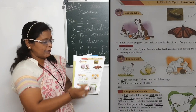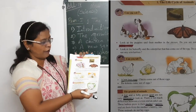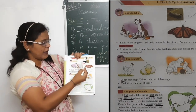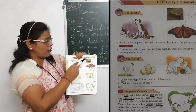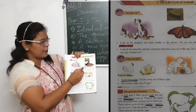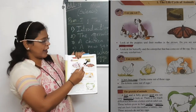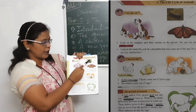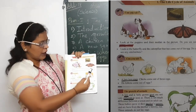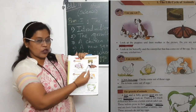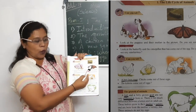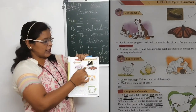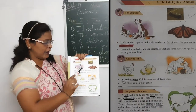Look at the butterfly and the caterpillar that has come out of the egg. This butterfly is an adult, grown-up butterfly. When it is in the form of a caterpillar, can you see any similarity? This caterpillar has emerged from the egg — come out of the egg. Can you see any similarity between these two? No, there is a very vast difference between these two pictures. They don't look alike.